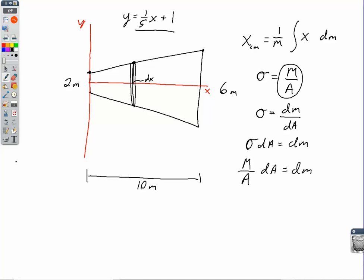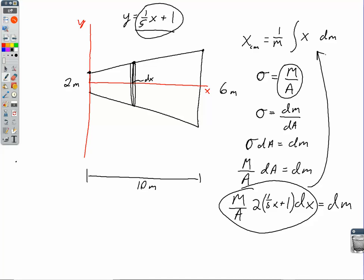So then dA, that infinitely small area, is going to be the length of the rectangle, which is going to be 2 times that linear function times the width of that rectangle, which is dx. So then that means that dA is equal to 2 times 1 fifth x plus 1 times dx. And that's dM. So as you can see, I have changed the dM into a kind of messy expression that has the total mass, the total area, and then the linear function in there times 2 times dx. So we're going to take that whole lovely little thing right there, and we're going to throw it in to the integral for dM up here.